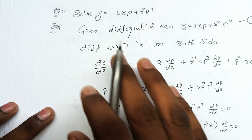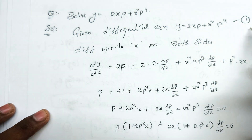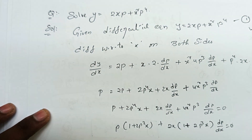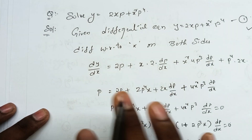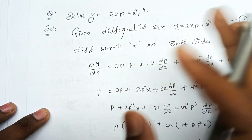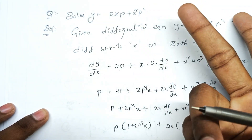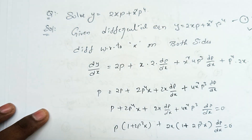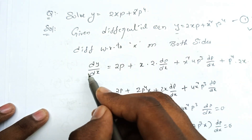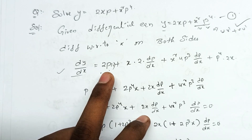Given the differential equation — what is the equation? That's the equation. Now, with respect to x, we have differentiation. x is the differentiation, so y is the differentiation.